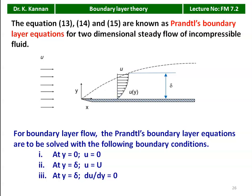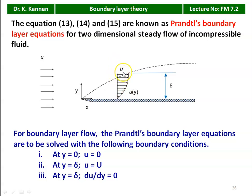For the equation, we require boundary conditions for flow over a flat plate. The free stream velocity is capital U, the boundary layer thickness is δ, and the velocity increases in the y-direction. At y = 0, u = 0. At y = δ, u = capital U (approximately 0.99U at the edge), the velocity is constant equal to U, and du/dy = 0. These are the three boundary conditions.